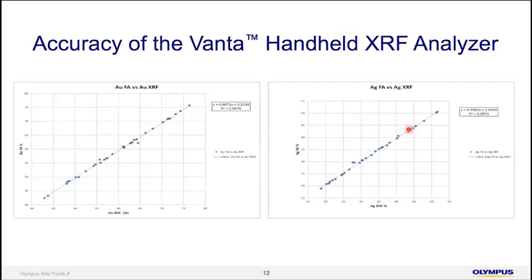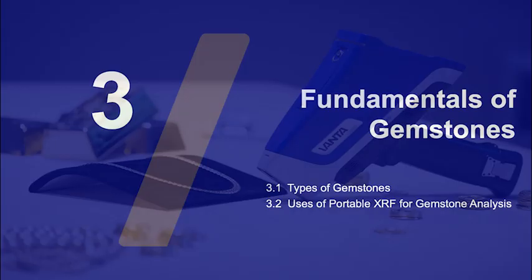We have done extensive testing comparing fire assay results with our XRF data. You can see a chart comparing from around 40% gold all the way up to 70%+ gold, with samples tested against fire assay results showing very good correlation. This is shown for both gold and silver. Extensive calibration work has been done with the equipment so that it reads accurately for precious metals.